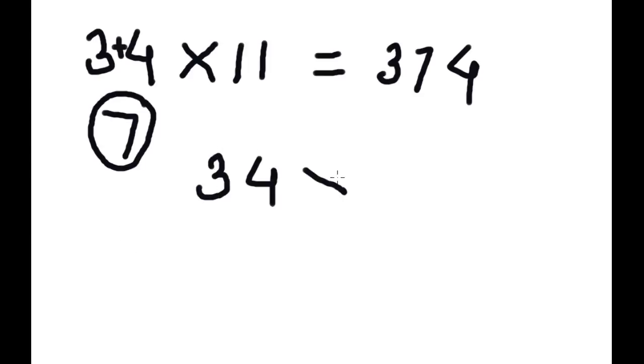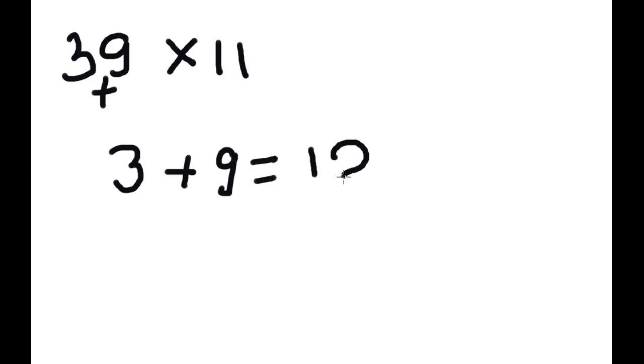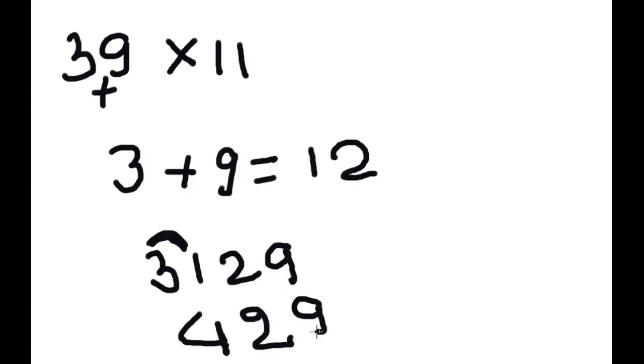Take another example: 39 into 11. Again, the same process. We will add 3 and 9. 3 and 9 equals 12. Now we will write 3, 1, 2, 9, and we will add this 3 and 1, so 429 is the solution.